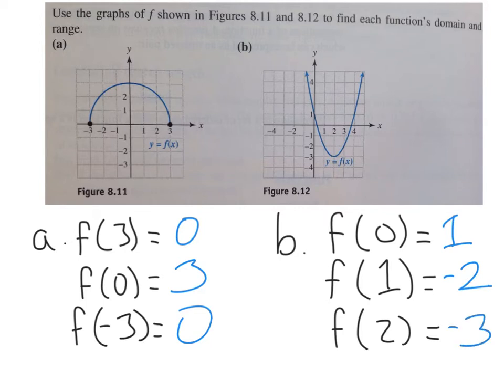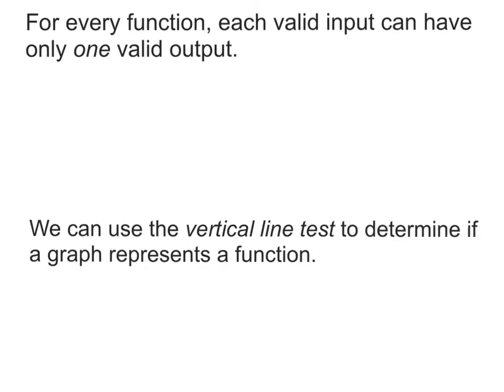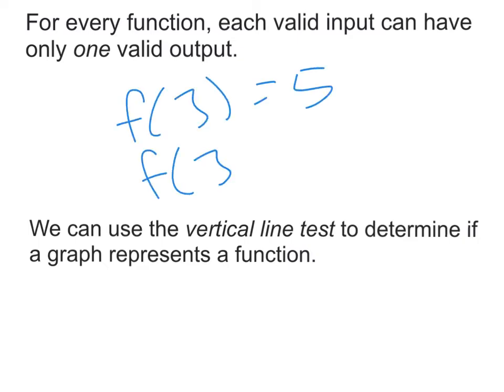These are easy problems, so make sure to get them right on the final. You're just reading what y is when x equals whatever you're plugging in. The last thing we'll cover is determining whether a graph represents a function. The key definition: for every function, each valid input can have only one valid output. So f of 3 can't equal both 5 and 10 — that would make it not a function.